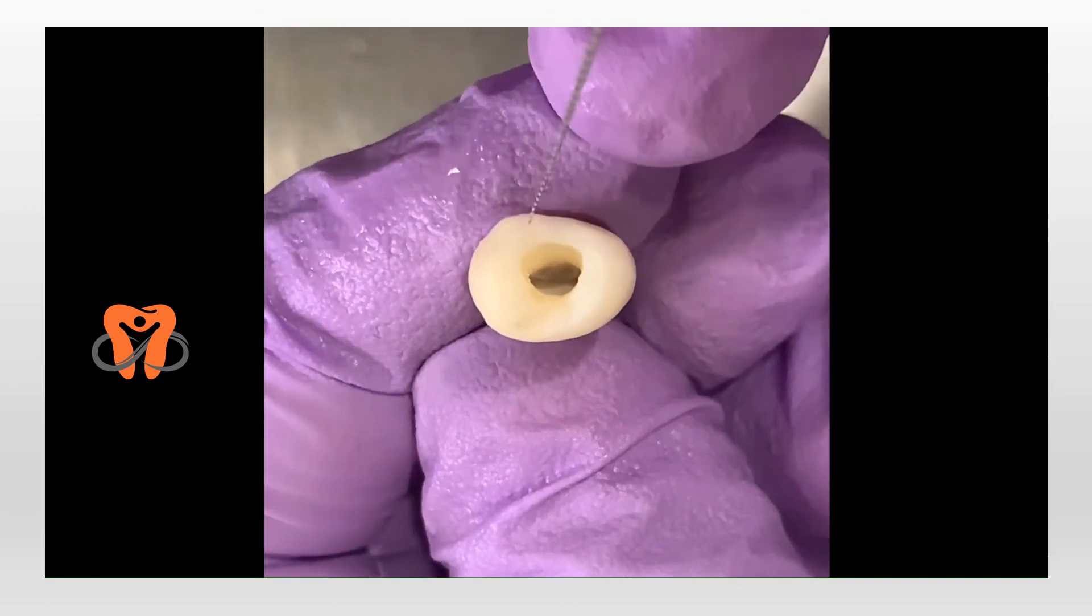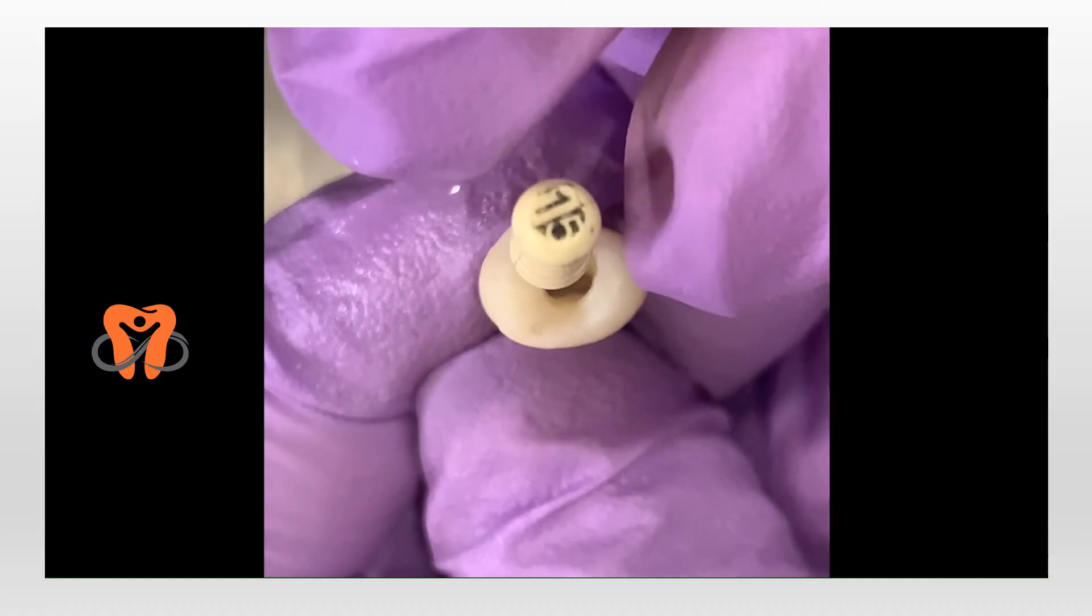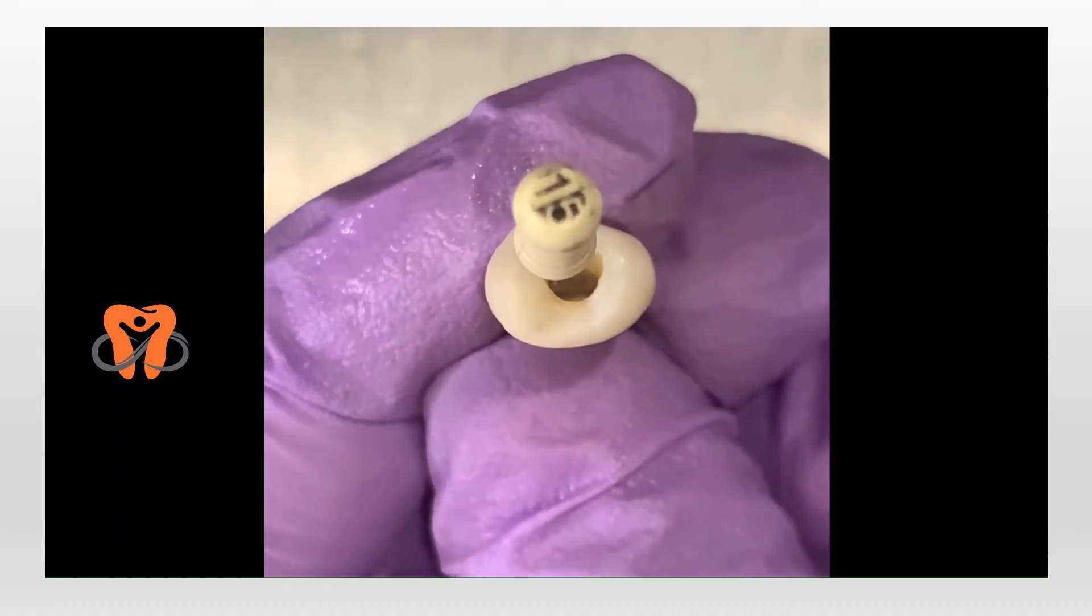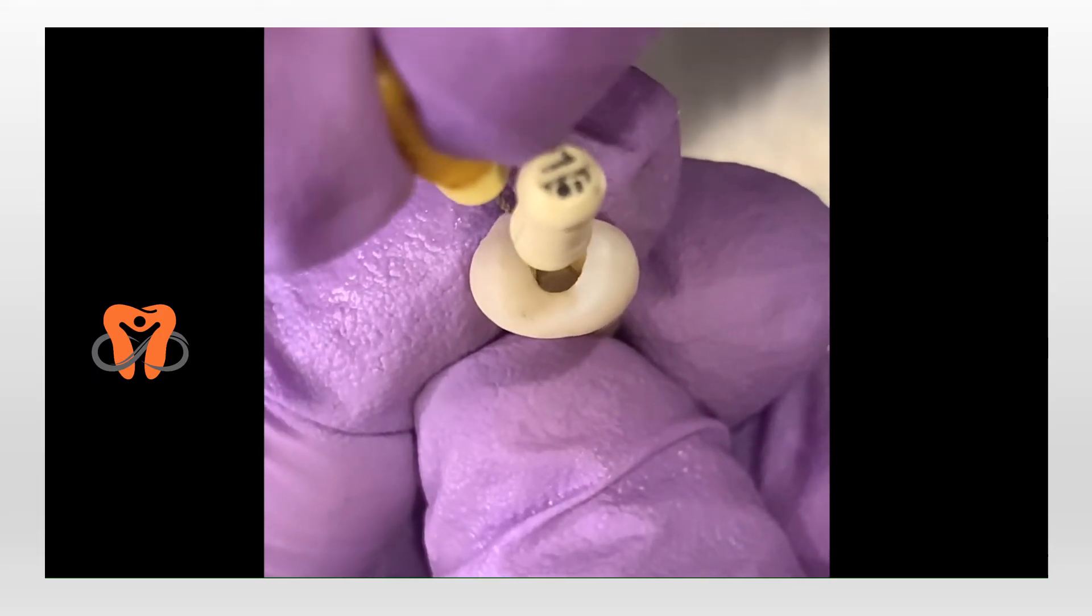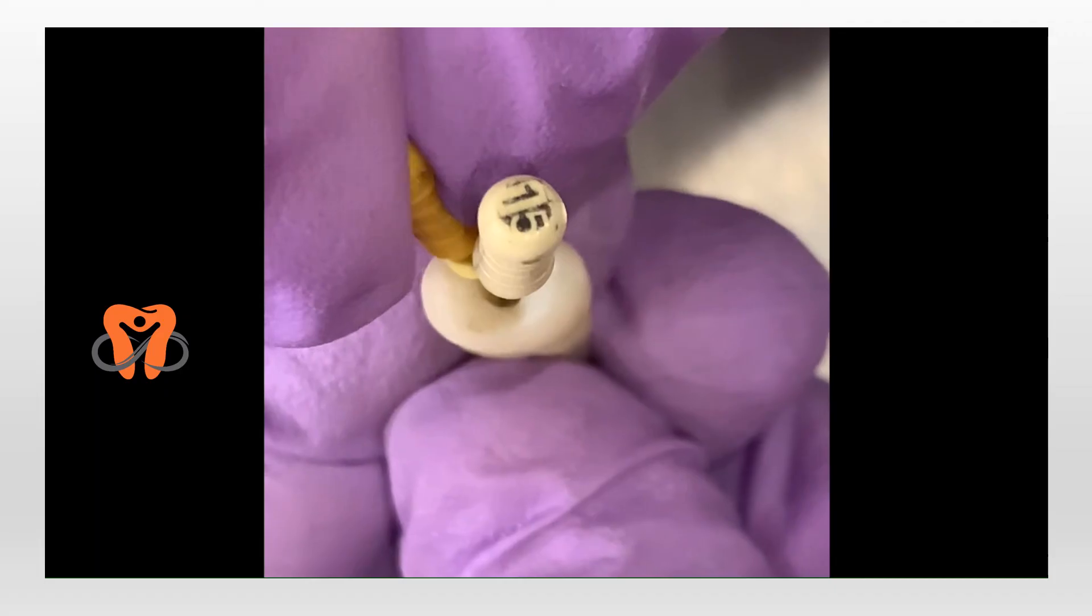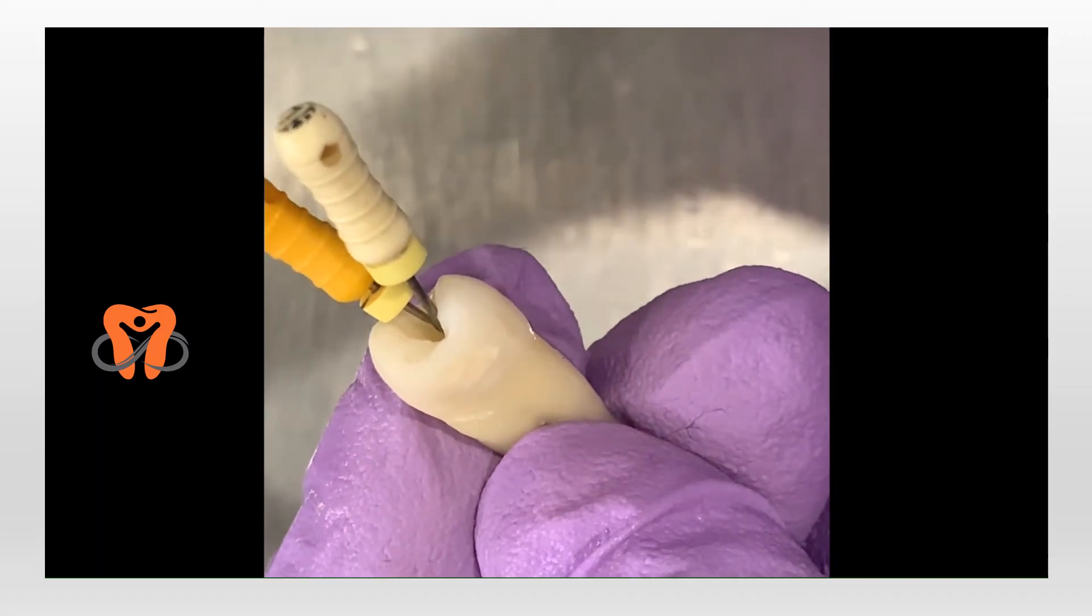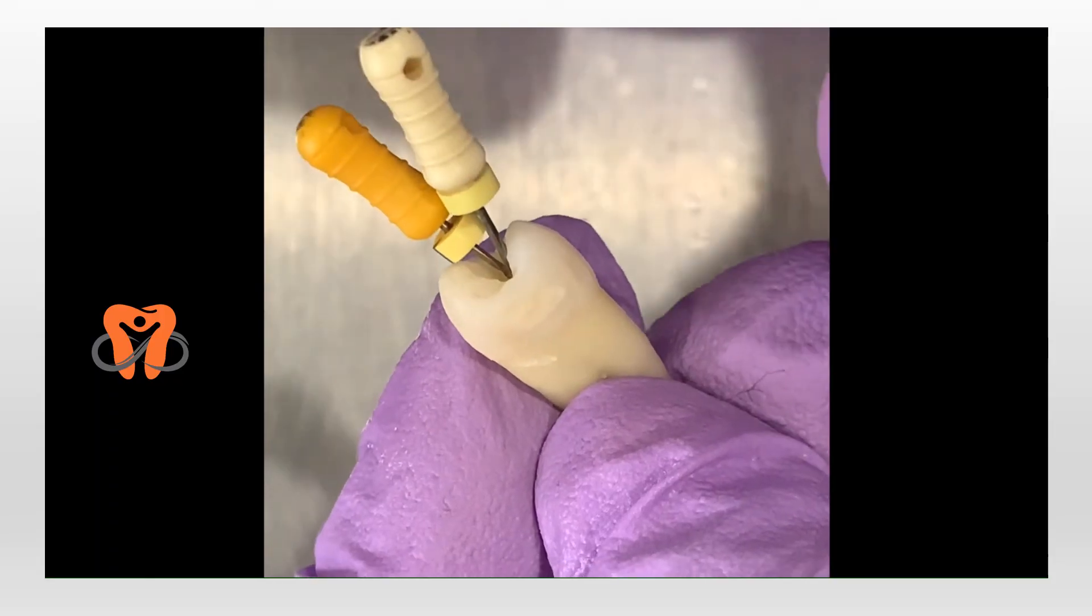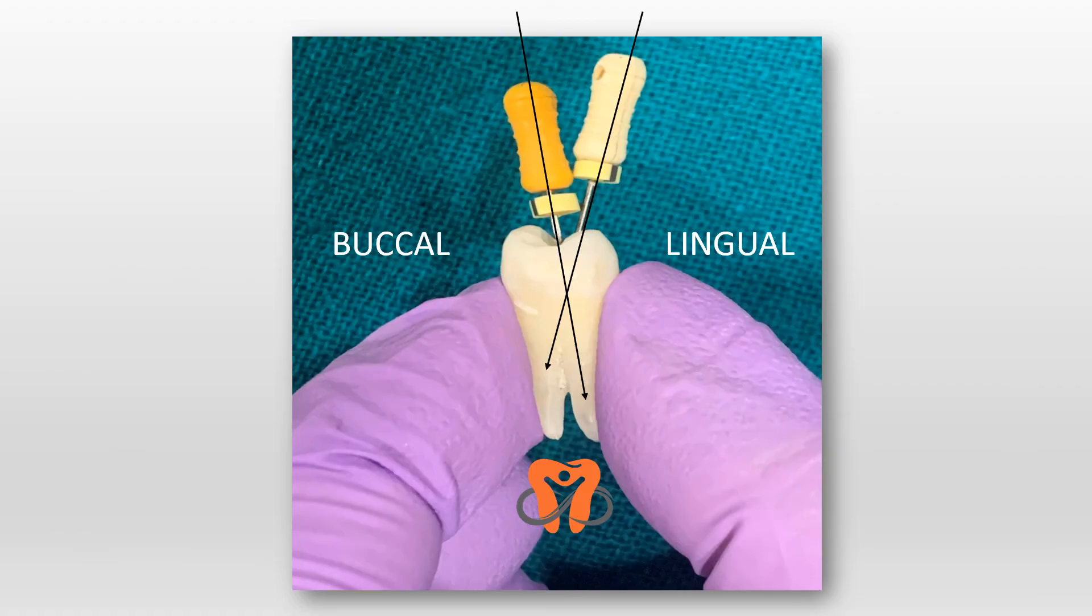I take a 15 number file, and from the lingual direction I'll enter into the buccal canal achieving a straight line access. Similarly, taking a 20 number file from the buccal direction, I will enter into the lingual canal. So I've managed to achieve a straight line access for both buccal and lingual canals.